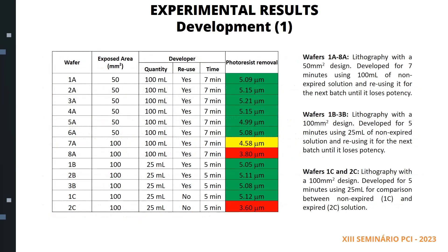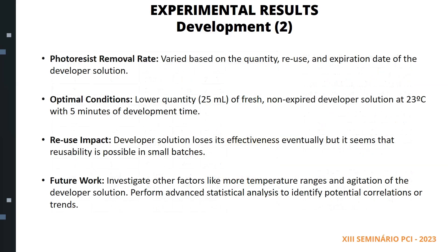In this slide, we can see a table showing the results for wafers developed under different conditions. We used AZ-400K developer, which is a diluted solution of potassium hydroxide. We varied the quantity of developer, development time, developer reuse, and temperature. We also used a mask with a square design of 50 and 100 square millimeters. Photoresist removal rate varied based on the quantity, reuse, and expiration date of the developer solution. Optimal conditions: 25 milliliters of fresh, non-expired developer solution at 23 degrees Celsius with 5 minutes of development time. Developer solution loses its effectiveness eventually, but reusability seems possible in small batches. Future work will investigate other factors like temperature ranges and agitation of the developer solution, and perform advanced statistical analysis to identify potential correlations or trends.